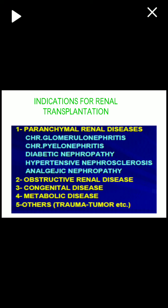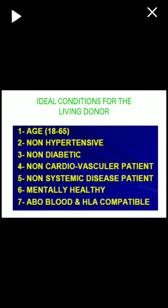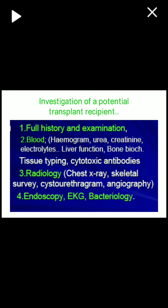Indications for renal transplantation include parenchymal renal disease, glomerulonephritis, pyelonephritis, diabetes, hypertension, analgesic nephropathy, obstructive renal disease, congenital diseases, metabolic diseases, and trauma or tumor-related disorders. Donor sources include living donors and cadaveric donors. Ideal conditions for a living donor: age 18 to 65, non-diabetic, non-hypertensive, no cardiovascular disease, no systemic disease, mentally healthy, and ABO blood and HLA compatible. Investigations of a potential transplant recipient include full history, blood hemogram, urea, creatinine, electrolytes, liver functions, bone biochemistry, tissue typing, and cytotoxic antibodies.